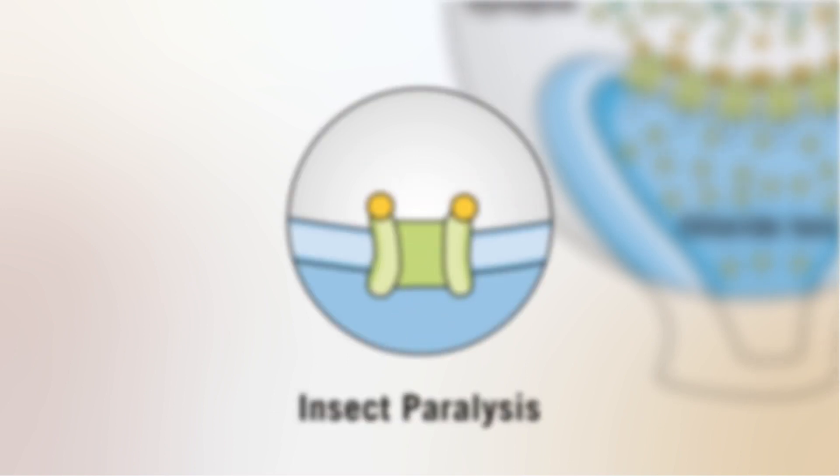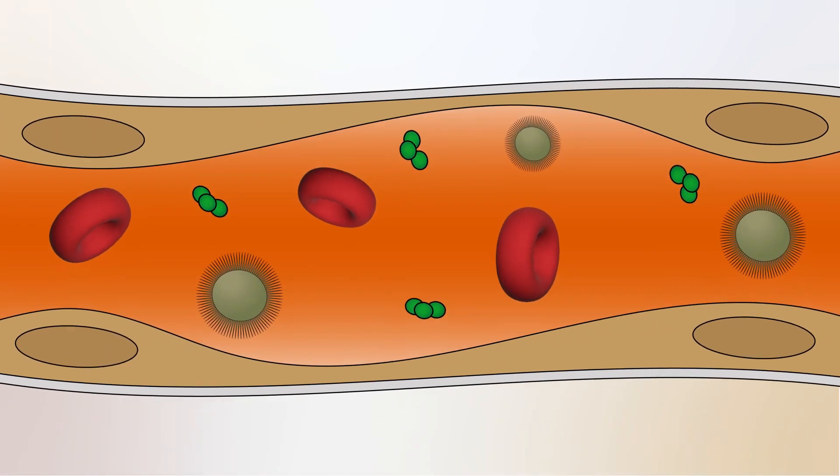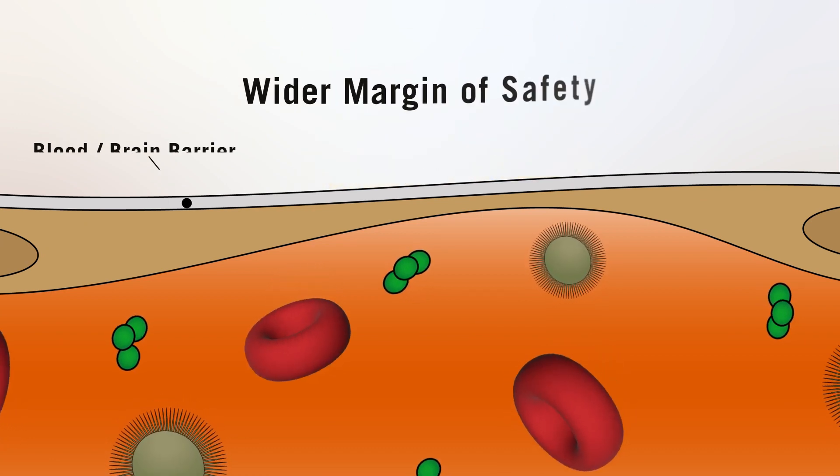Glutamate-gated chloride channels are not found in mammals, thereby giving abamectin a wider margin of safety.